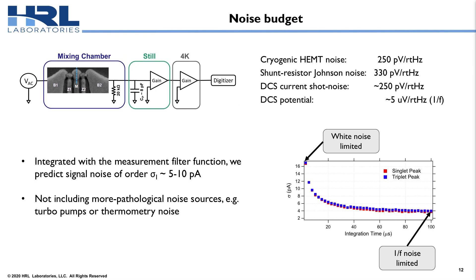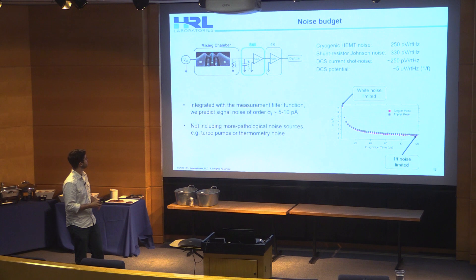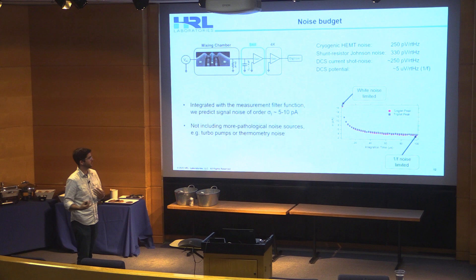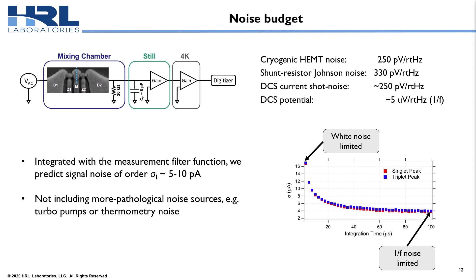As I try to budget those three components, I'll start with the simplest one, which is the noise. When we set up this configuration right here, what we've done is we've taken the three main white noise components, which is noise from the cryogenic HEMT, Johnson noise from the shunt resistor, and then shot noise from the DCS current itself. And these are all about of a similar magnitude. Furthermore, the dot charge sensor itself experiences a 1 over f charge noise process. So if I take those together and I integrate them with the filter function of our measurement, we predict signal noise on the order of 5 to 10 picoamps, which is pretty accurately what we observe. And I'll call out as well that this is not including some of the more tricky noise sources. If you have grounding issues and you can see noise from your turbo pumps or your thermometry, those are going to come into play in a more complicated fashion.